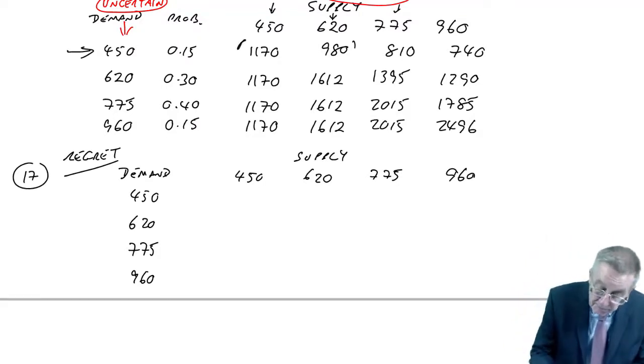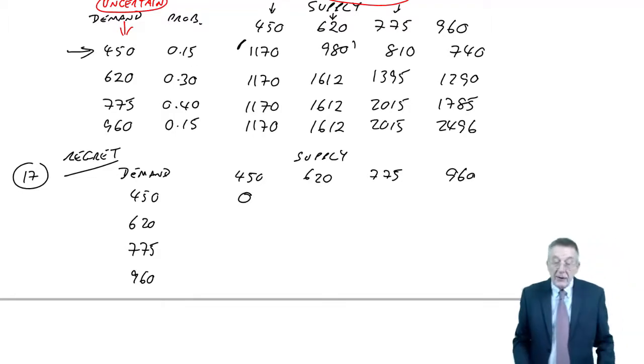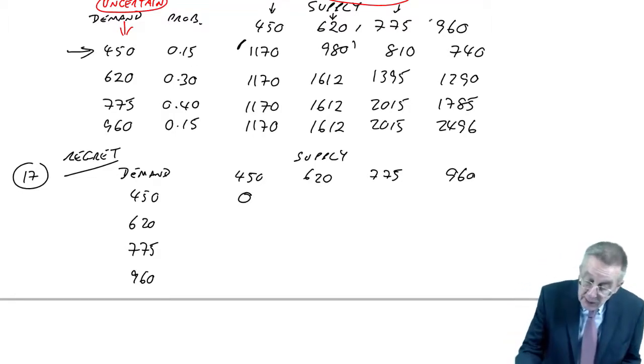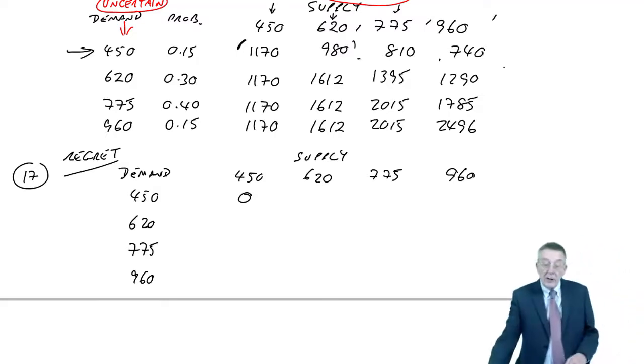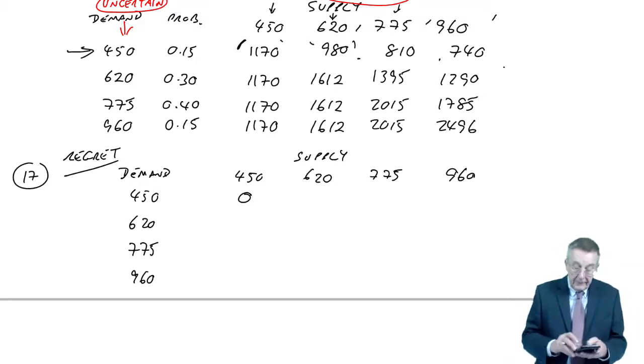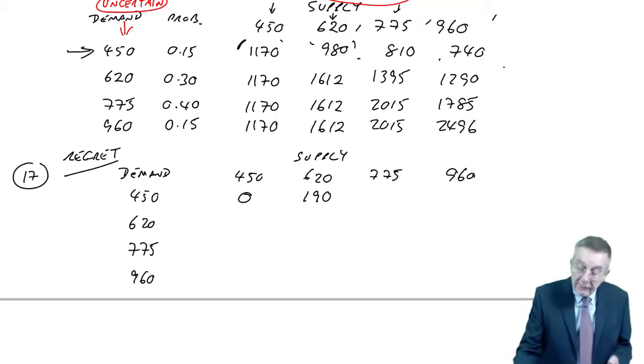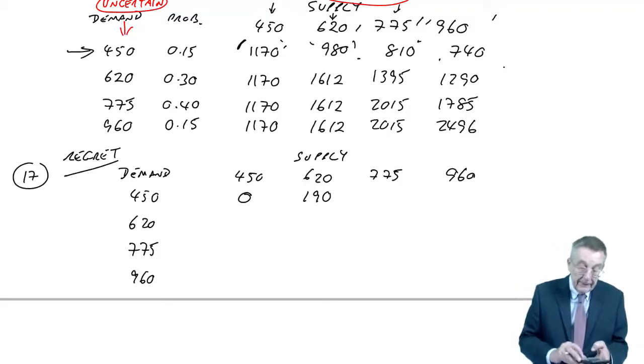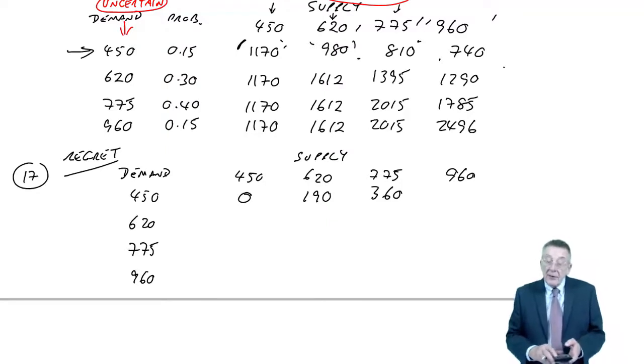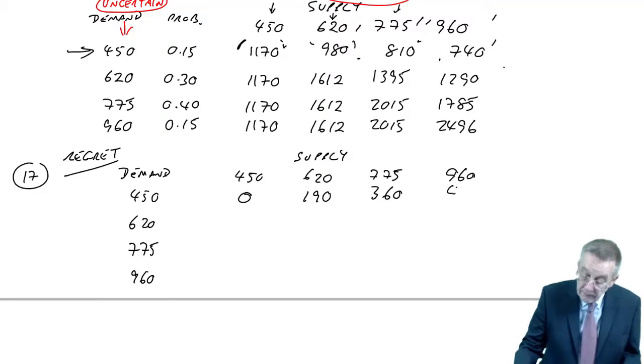If the demand was 450, the maximum best profit would be 1170. You'd have supplied 450. So if you supplied 450, there'd be no regret. If, though, you'd supplied one of the other levels, you've less profit, you've got regret. So if you'd supplied 620, you'd have only got 980 as against 1170. The difference is 190, the regret, the loss. If you'd have supplied 775, you'd have only had 810, you could have had 1170. The difference is 360, the loss. And finally, if you'd supplied 960, you'd have got 740, you could have had 1170. The difference is 430.